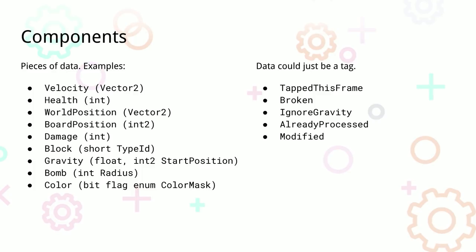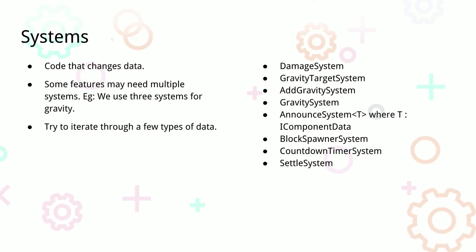There are also systems. Systems are the opposite of data — it's just code, and there shouldn't be any data in systems. They act upon the data. Some features we've broken down into multiple systems: a gravity prediction system, an add gravity system, and a gravity system — split into three systems. The whole idea is you take a few pieces of data and just work on those together.